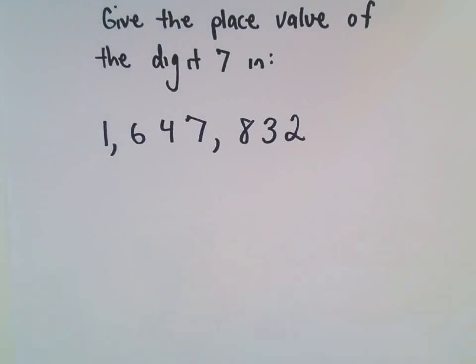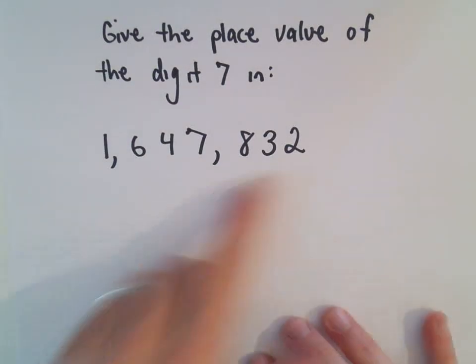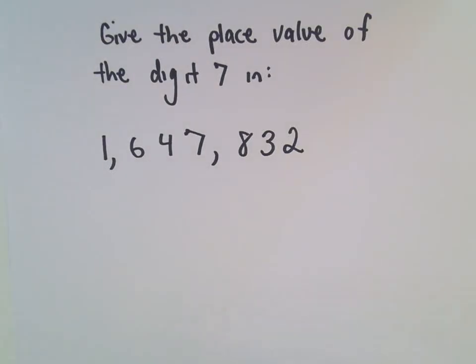So, following question, what we want to do is we're going to take this number 1,647,832. And what we want to do is we're going to figure out the place value of the digit 7. And actually I'm going to do a little bit more. I'm going to actually just go ahead and label the place value of every digit.